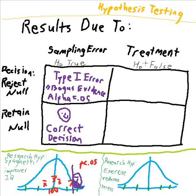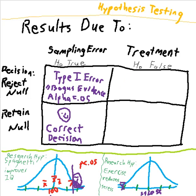Let's consider the other possibility: results are due to the treatment — the treatment is actually helpful. Research hypothesis: exercise reduces stress. In that case, we would find out that people who exercised a lot had really low stress, and we would say, look at how low the stress is — that's most likely due to treatment. In that case, we'd have a correct decision.